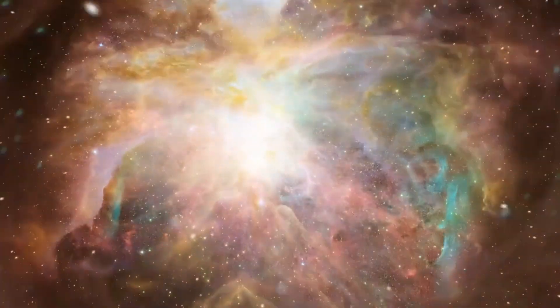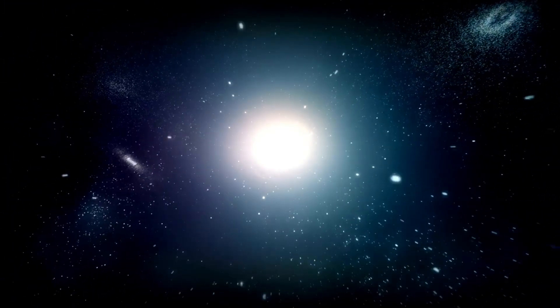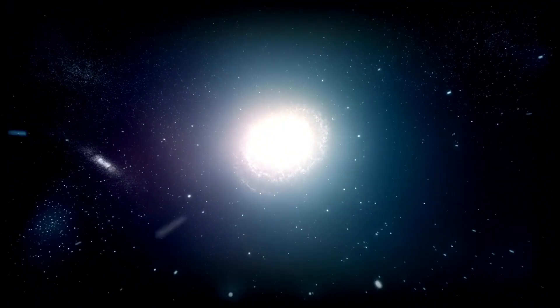The same is true for light. When a light source such as a distant star moves towards us, the light we see shifts toward the blue end of the spectrum. Conversely, when the light source moves away, the light shifts toward redder shades. This phenomenon is known as redshift.